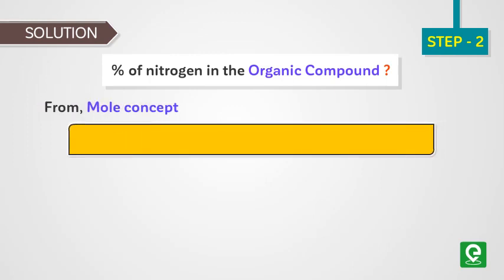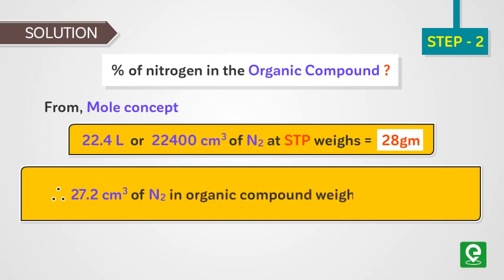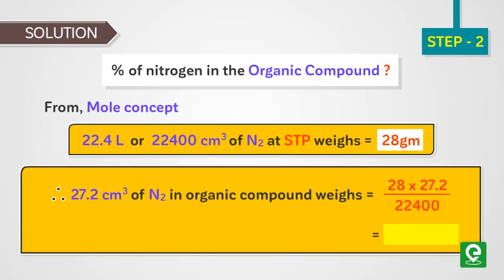From mole concept, we know that 22.4 liter or 22,400 centimeter cube of nitrogen gas at STP weighs 28 grams. Therefore 27.2 centimeter cube of nitrogen gas in the given organic compound weighs 28 × 27.2 / 22,400 = 0.034 gram.